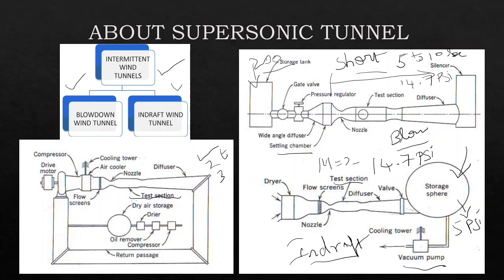For every supersonic tunnel, we consider the driving pressure. The driving pressure equals high pressure minus low pressure. In the blowdown tunnel, high pressure is the storage tank pressure and low pressure is atmospheric; in the in-draft tunnel, high pressure is atmospheric and low pressure is the vacuum chamber pressure.